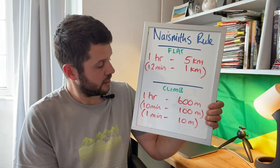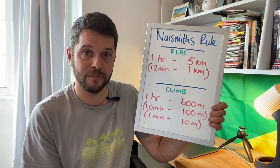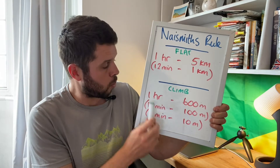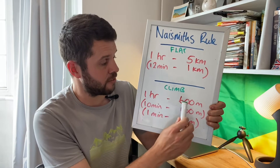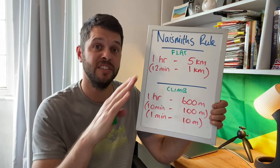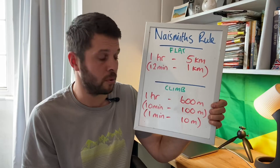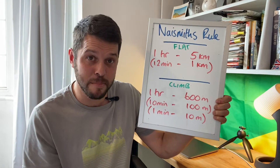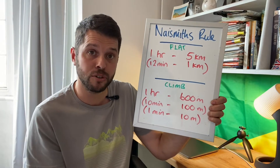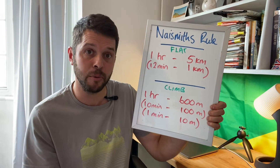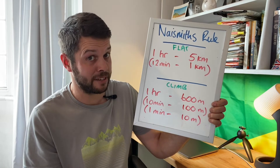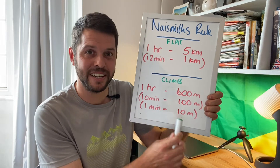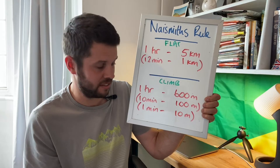For climbing, these are the times we need to add for the amount of ascent. We'd need to add one hour for every 600 metres of ascent. Breaking that down further, we add 10 minutes for every 100 metres of ascent. Breaking it down even more, we add one minute for every 10 metres of ascent.